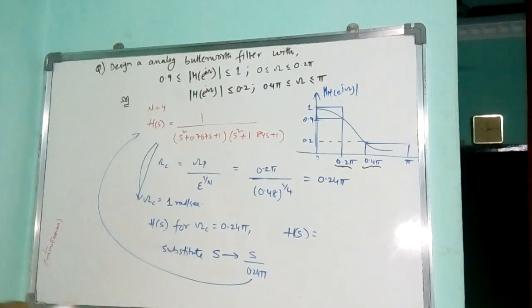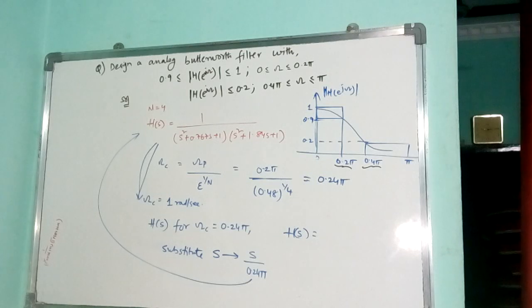That completes my design. So I found out the transfer function of the given Butterworth filter, I found out the order, I found out the cutoff frequency. As far as design is concerned, these three points are considered to be the important points for the design. In the next video we will see how to design a Chebyshev filter using given specifications. That's all for this video. Thank you.